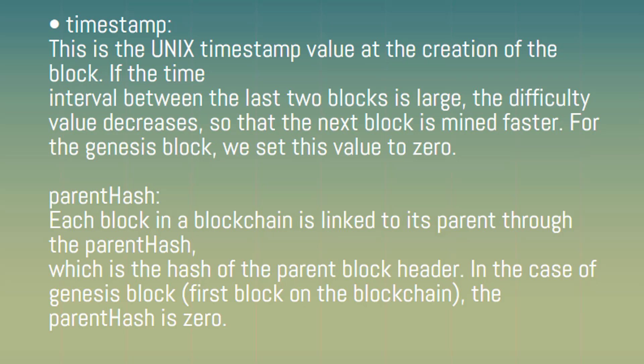Timestamp: This is the UNIX timestamp value at the creation of the block. If the time interval between the last two blocks is large, the difficulty value decreases so that the next block is mined faster. For the Genesis block, we set this value to 0.